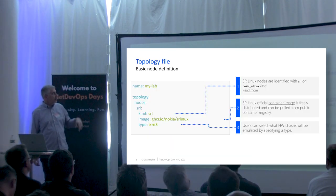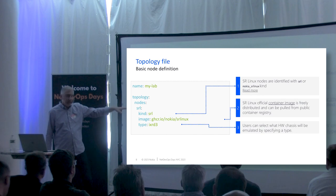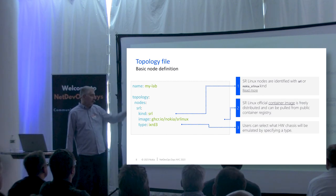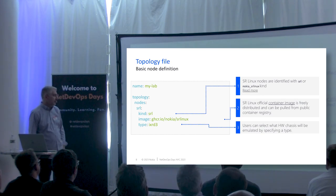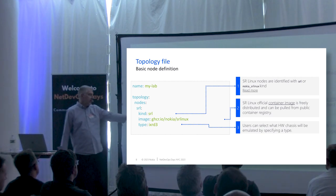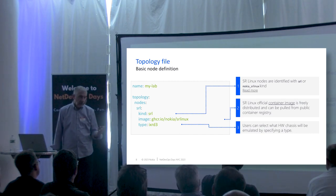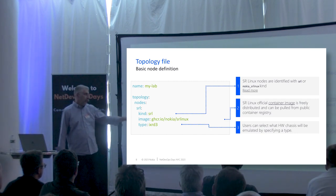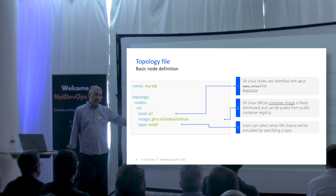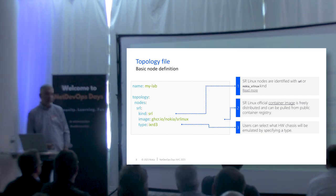Your topology file starts with node definitions — the instances you're testing. Here I've called out SRLinux, Nokia's network operating system for data center. What we've done with our image from the get-go was make our container version freely available — it's in the GitHub container registry and you can pull it down. You can then set a chassis type, so you could do any of the different models from pizza boxes to a chassis, and get your appropriate line card numbering and port numbering.